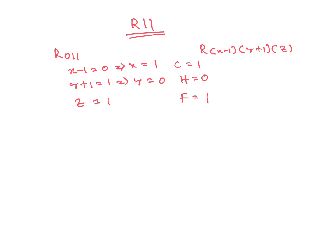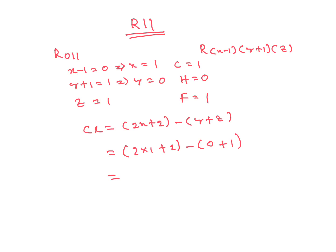For chlorine, the formula is 2X plus 2 minus Y plus Z. Substituting: 2 times 1 plus 2 minus 0 plus 1 equals 4 minus 1 equals 3. So we get carbon=1, hydrogen=0, fluorine=1, chlorine=3.